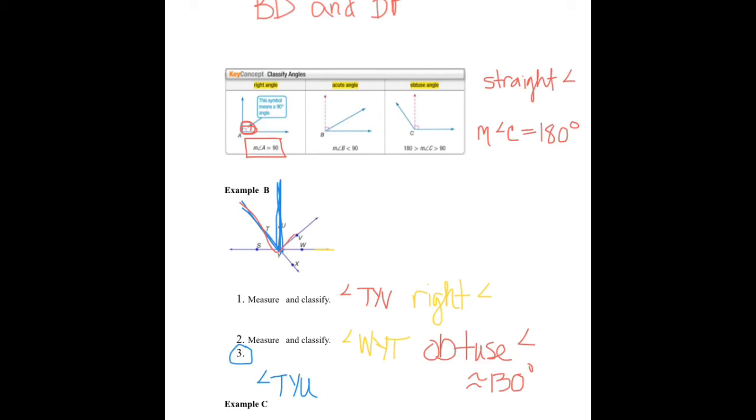So I know that TYV is 90. TYU could be half of that. Like maybe Ray YU is an angle bisector. We could guesstimate that. So if that were the case, we could say that this has about a measure of 45 degrees. Again, we're not going to pull out a protractor and try to do any measuring. But could you classify that angle as right, acute, or obtuse? Well, it is acute because it is less than 90 degrees.